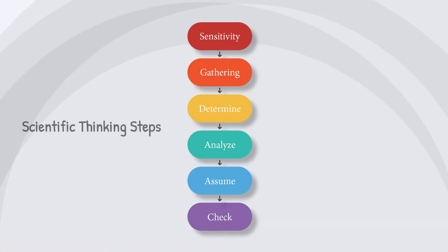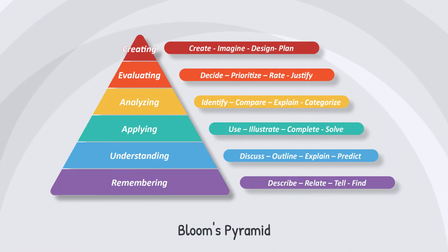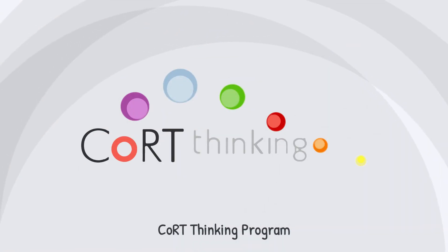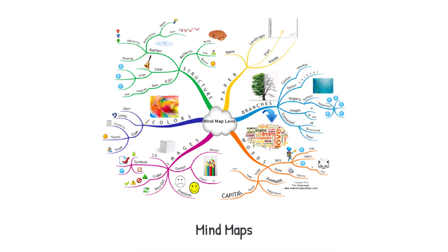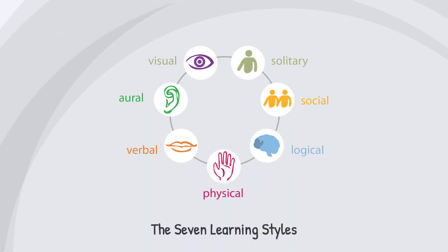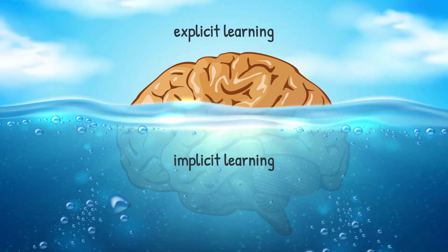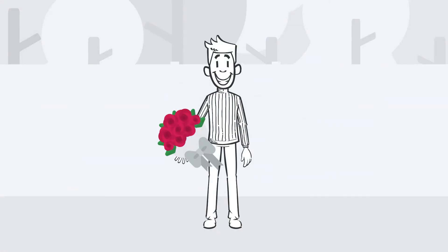The Depth Feature: MINE includes several concepts spread in common educational trends and theories. For example, we can see some of these concepts in Scientific Thinking Steps, Bloom's Pyramid, Court Program, The Two Lobes Thinking, Mind Maps, The Six Hats, The Seven Learning Styles, Explicit and Implicit Learning, up to management thoughts such as leadership. MINE picks the roses from our intellectual gardens and collects them in one pretty vase.